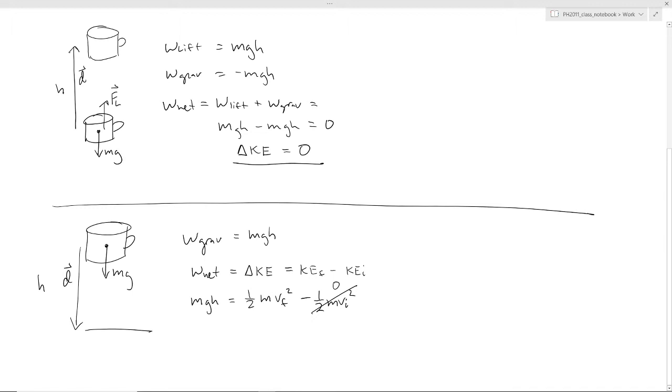And then you can see you can solve this, for example, for the final velocity and find out how fast it would be when it hits the table. So notice this factor of m will cancel. It doesn't depend on the mass.